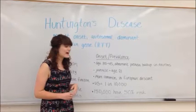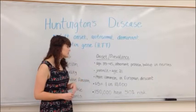Onset typically occurs between age 35 and 45 and is due to a buildup of the aberrant protein within the neurons. There are cases of juvenile Huntington's and this occurs before age 21.